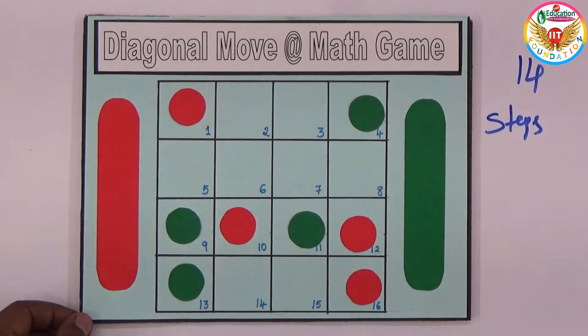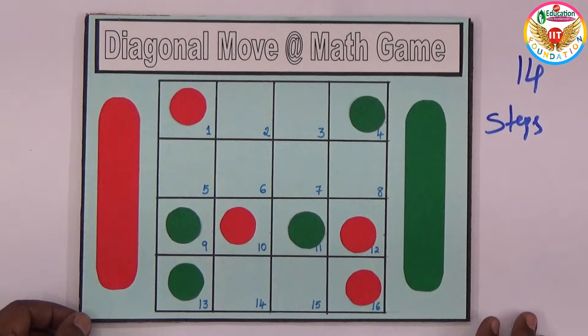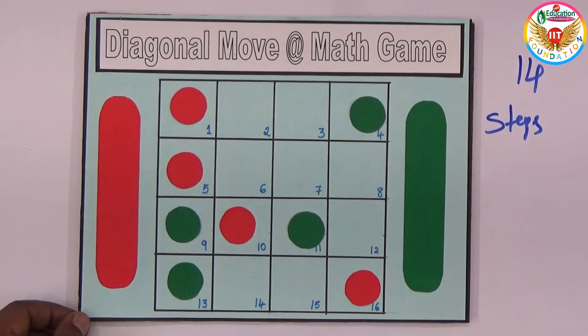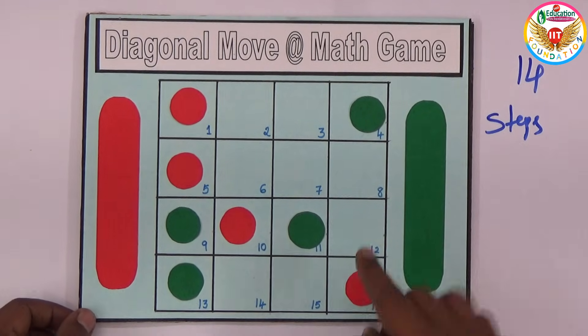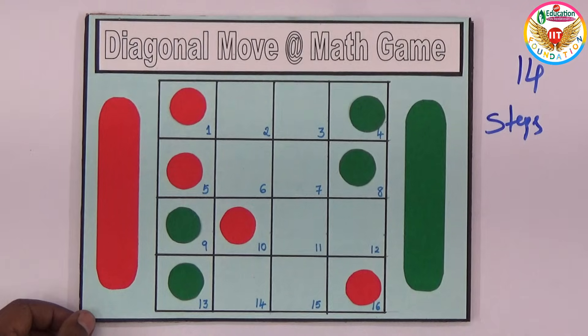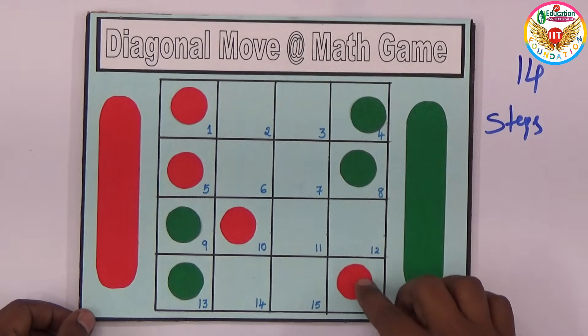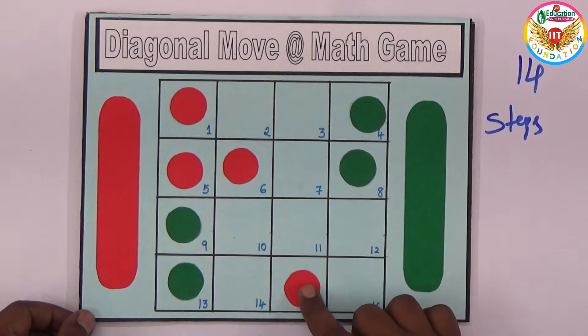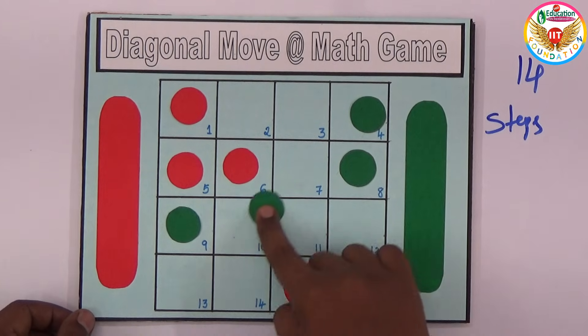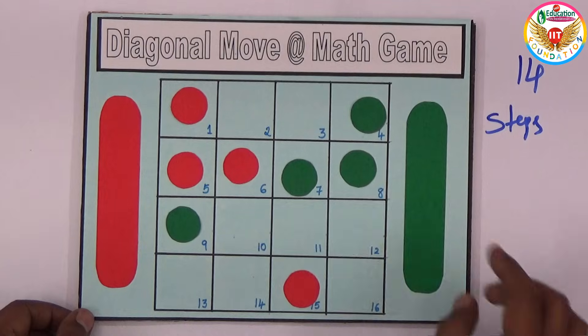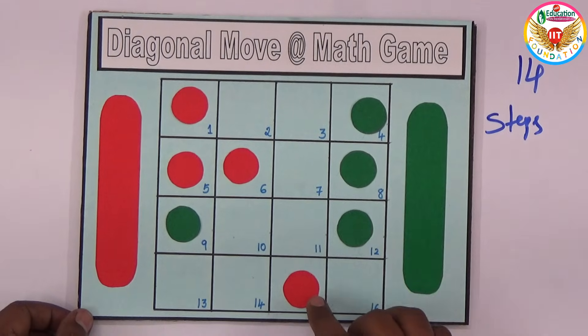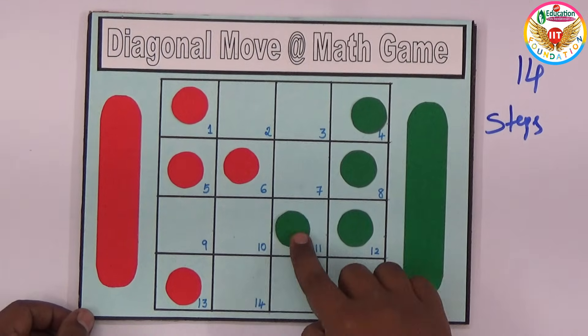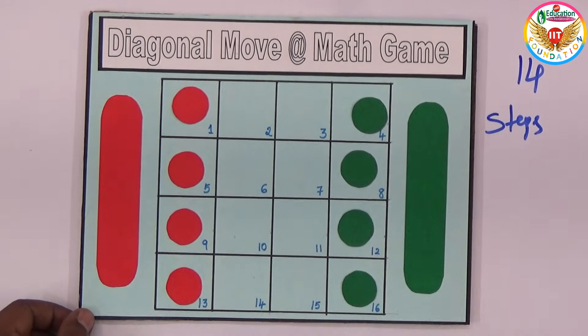This is twelve, thirteen, fourteen - fourteen are over already. Again fifteen, sixteen, seventeen, eighteen, nineteen, twenty, twenty-one.